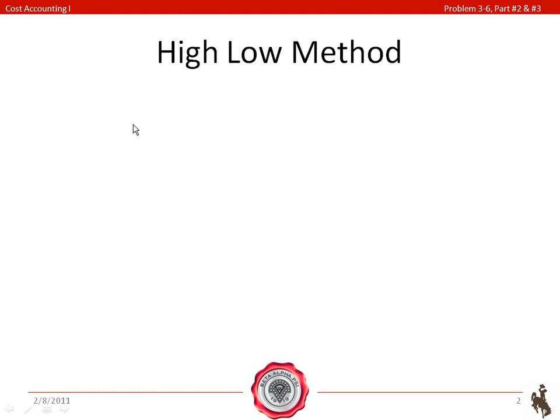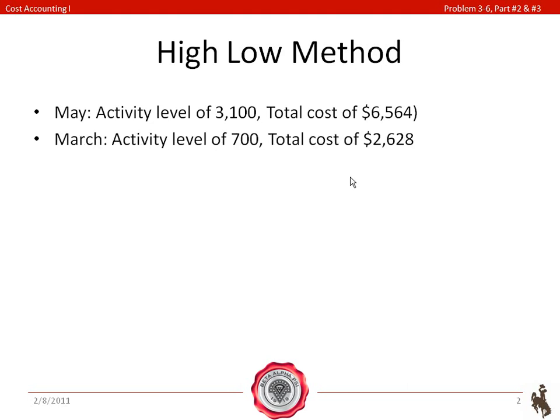You're looking at a bunch of information right now, and you need to pull out two sets of information. You need to find the lowest activity level and the highest activity level. So, we have our highest activity level in May with 3,100 tans with a total cost of $6,564. And then our lowest activity level happened in March with a total cost of $2,628 and an activity level of 700.